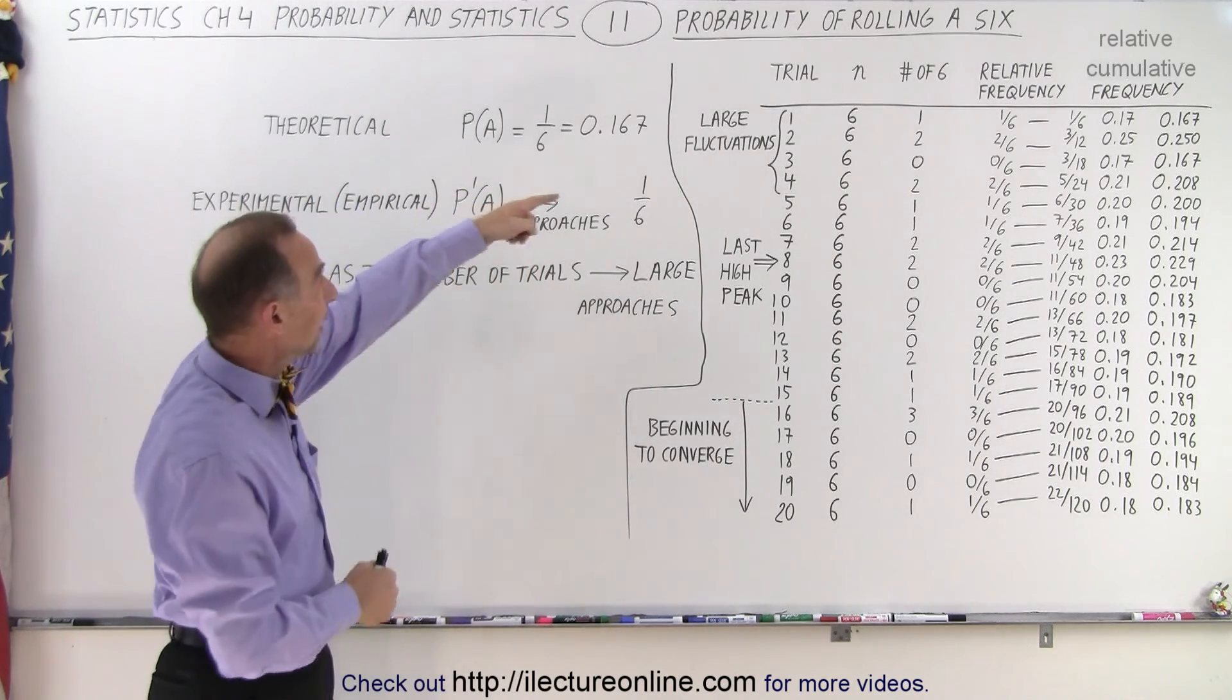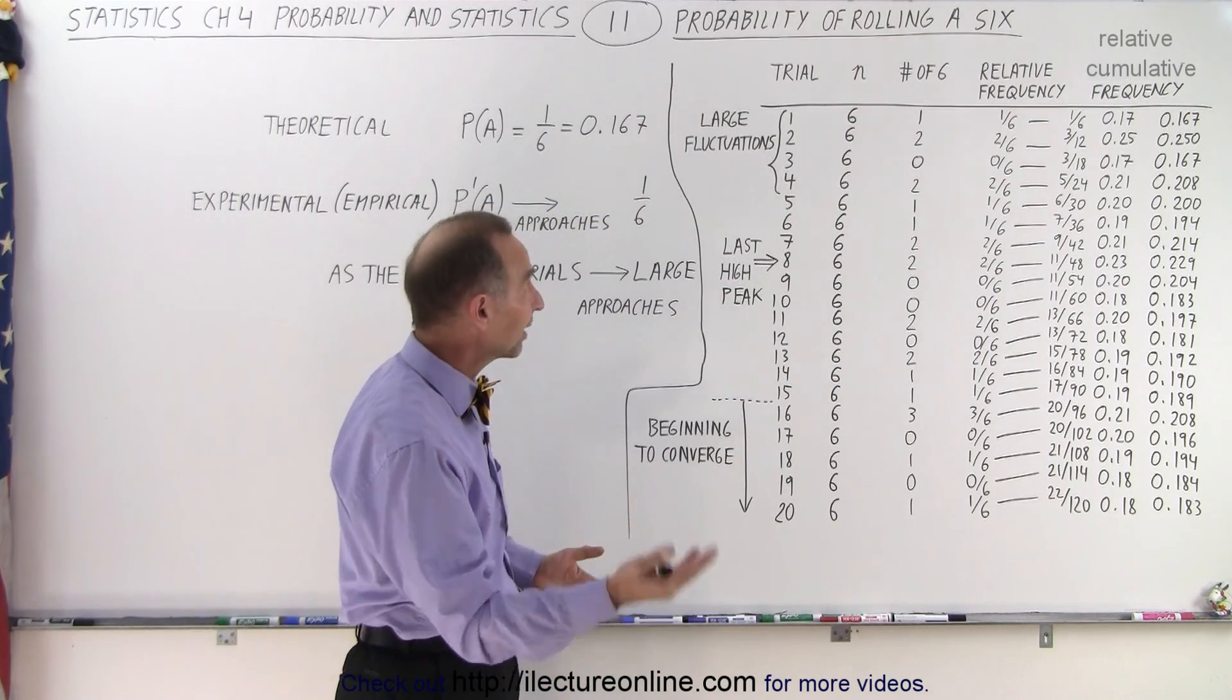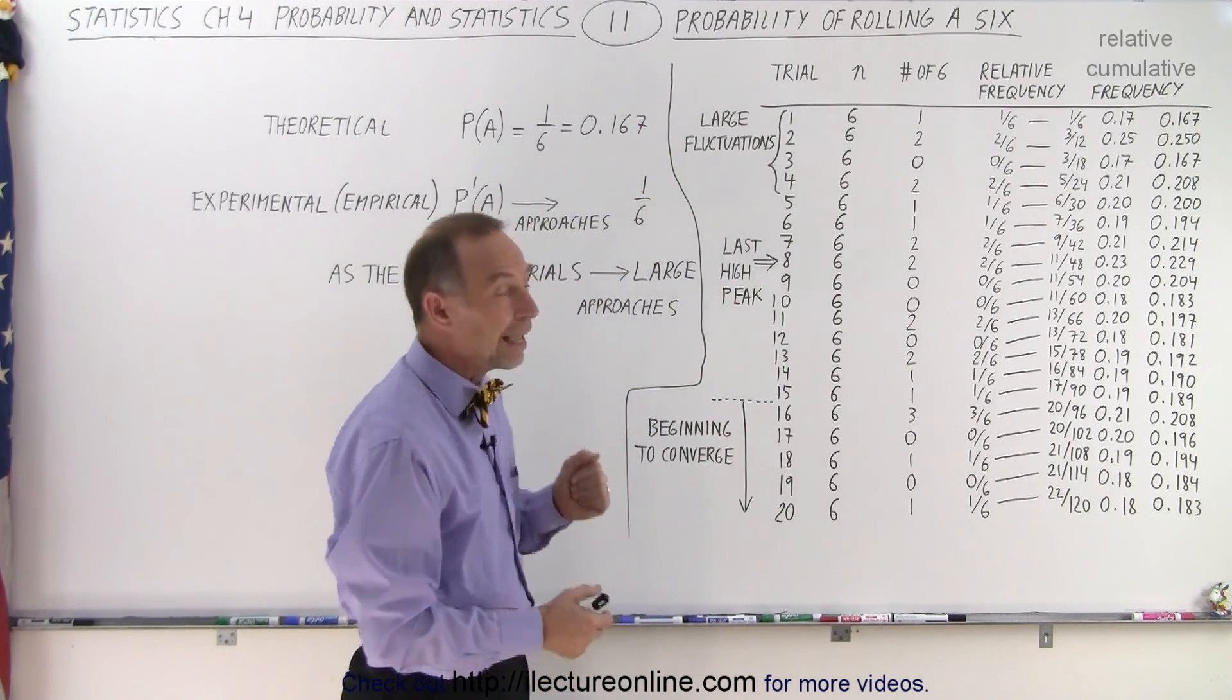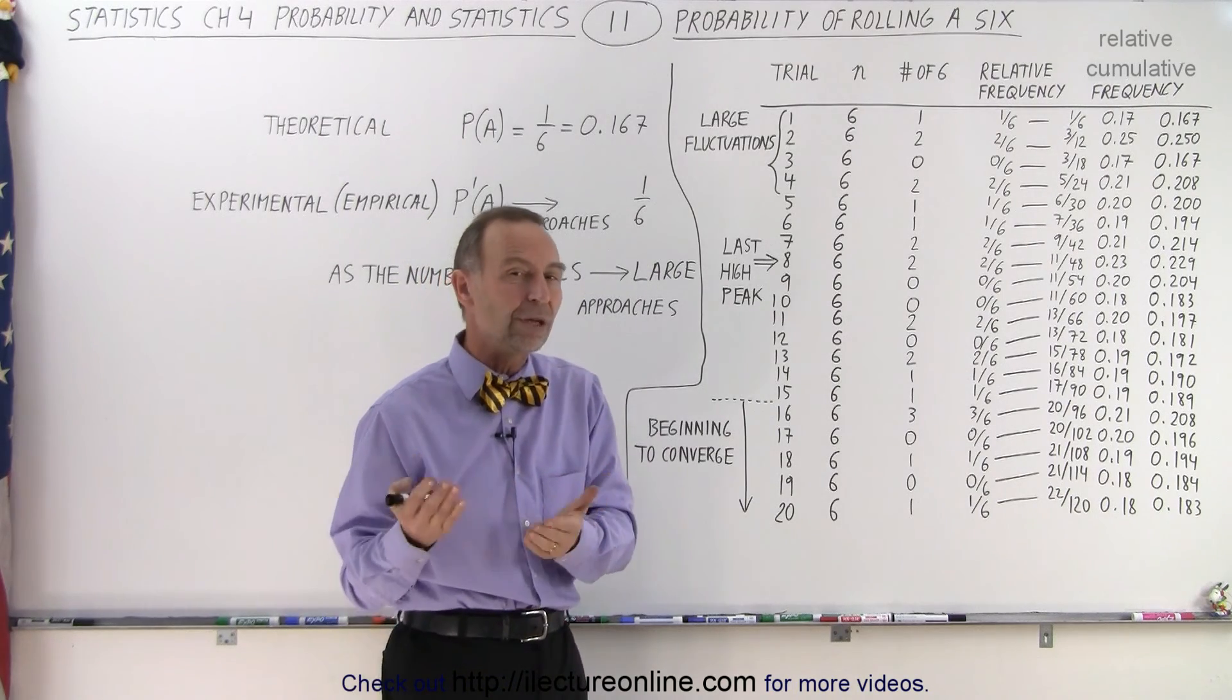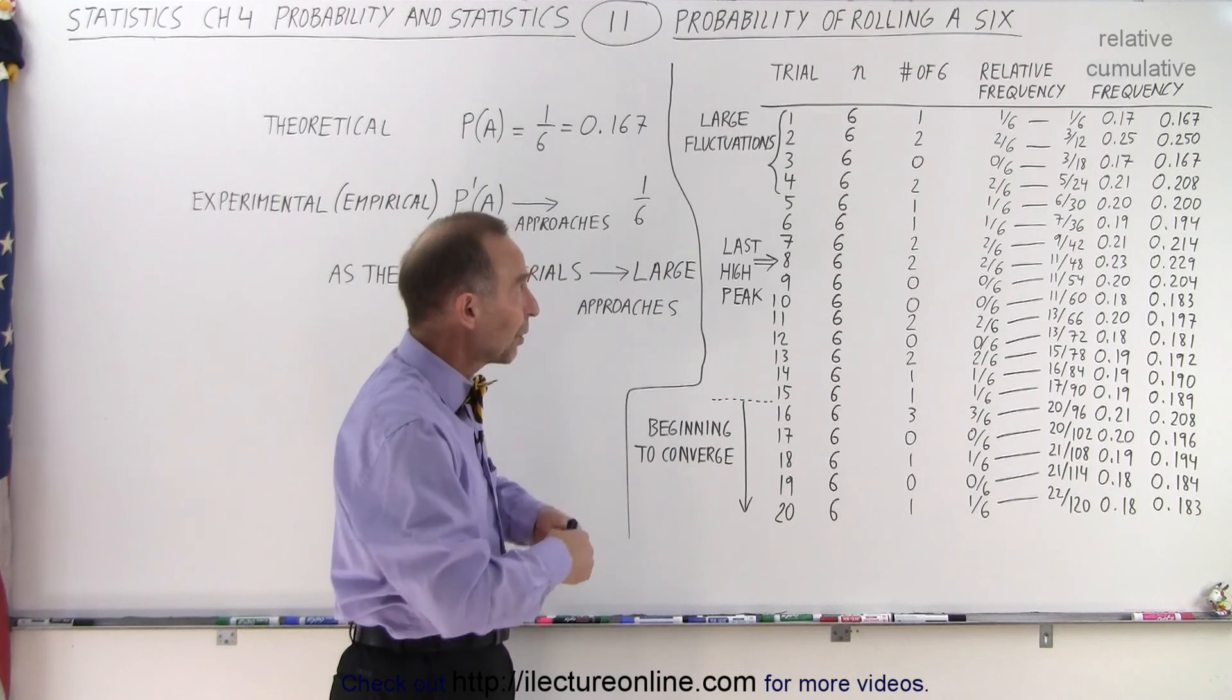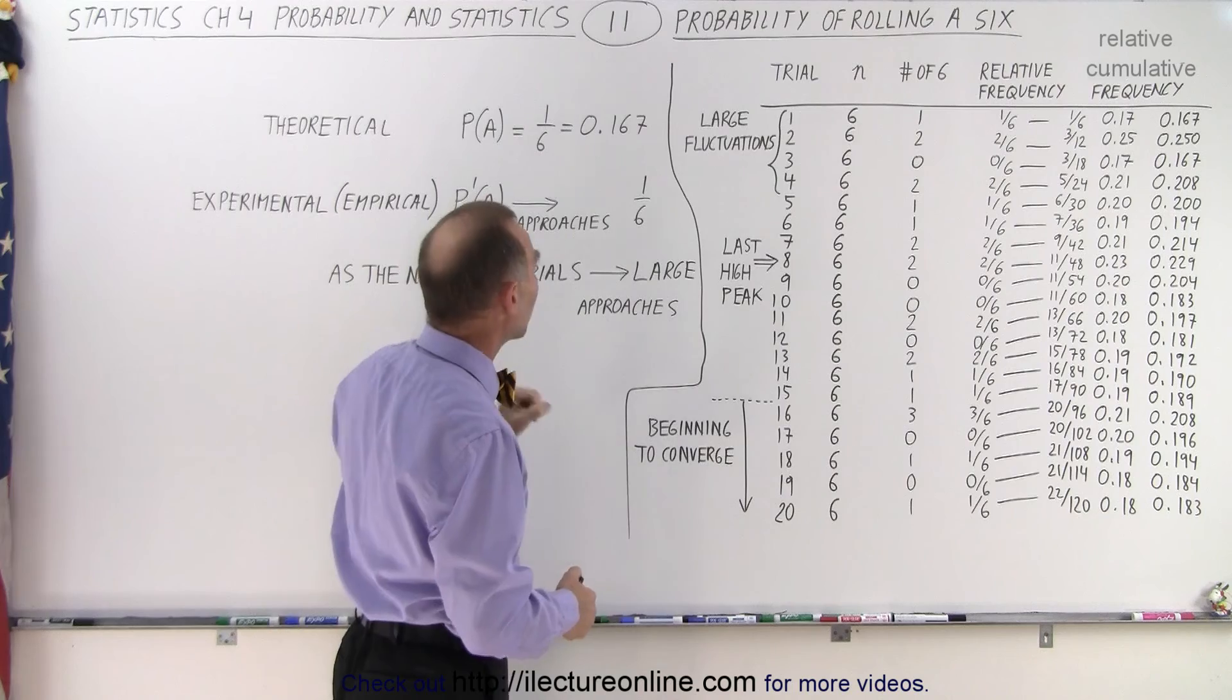So here we can see that if we have a number of trials, and we're going to do 20 trials of tossing a die six times, and the objective is to see out of those six times how many times do we throw a six. We would expect the probability to be one out of six, so we call that the theoretical probability.